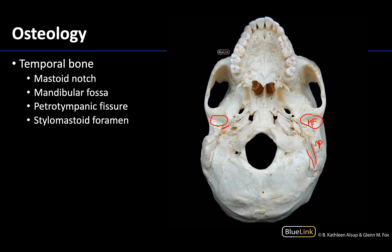Lastly for this view, between the mastoid and styloid processes you will see a tiny pinprick foramina — it literally looks like a pinprick, it is that small. This is the stylomastoid foramen, and that name makes total sense: it's between the mastoid process and the styloid process. This is where the bulk of the facial nerve will exit the skull.